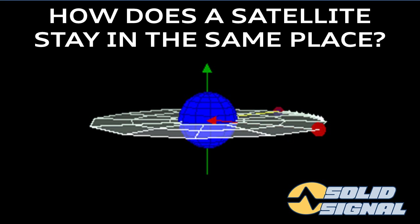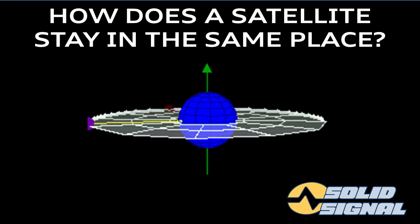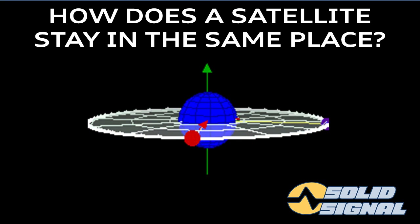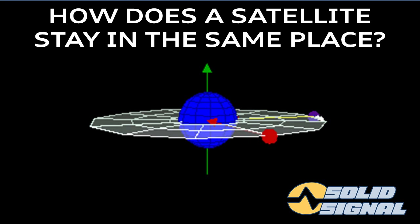Geostationary orbit means that it looks, from our point of view, like something is hovering over exactly the same point on the Earth all the time. If you have something that orbits the Earth in exactly one day, and it's sitting exactly over the equator, it's going to seem like it's hovering over one point. How high up does it need to be? 22,000 miles is the magic number for gravity, centrifugal force, and geostationary orbit to all work out.